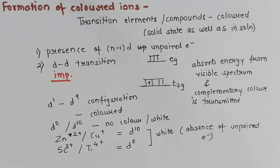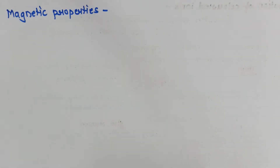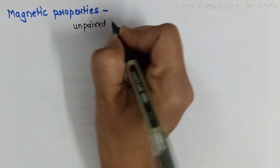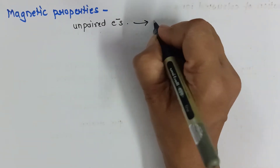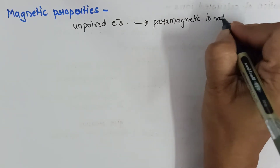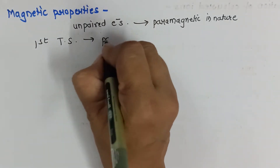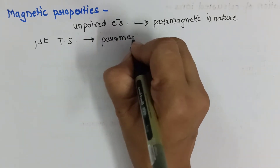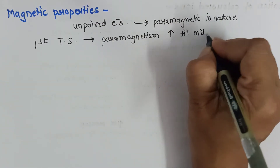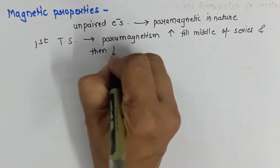This is how give-reason questions can be asked on this topic. The next trend is magnetic properties. Transition elements have unpaired electrons, and due to their presence, transition elements are paramagnetic in nature. In the first transition series, paramagnetism increases till the middle of the series and then decreases because the number of unpaired electrons goes on decreasing.